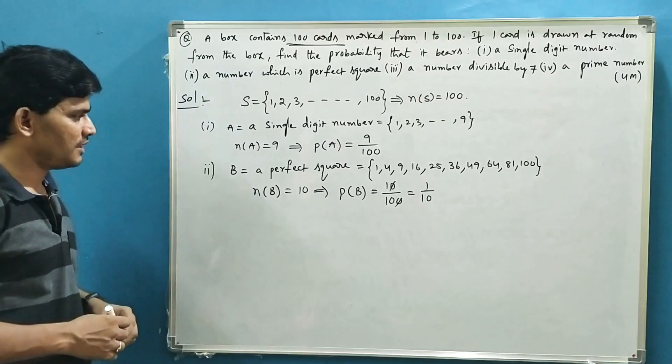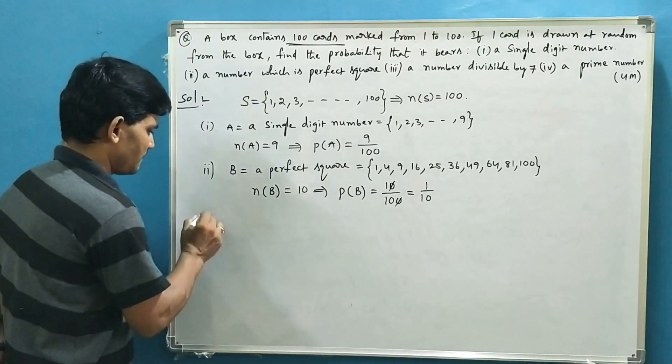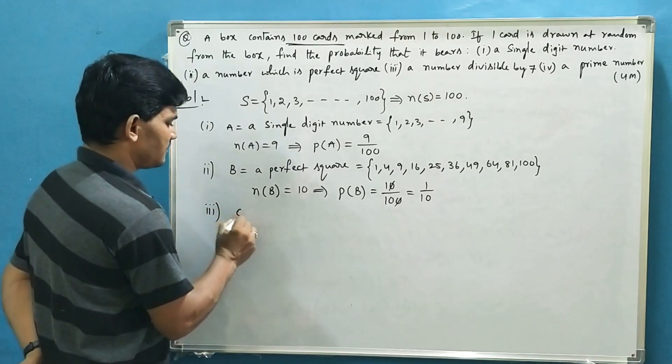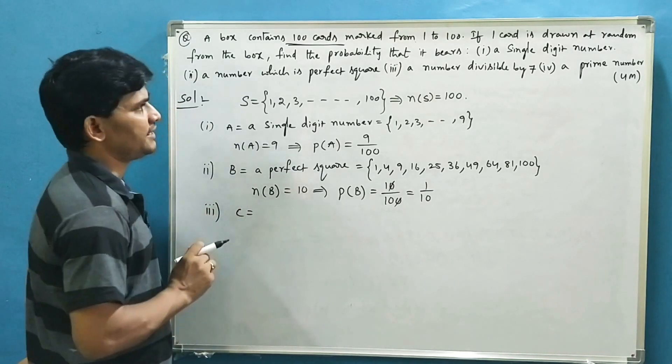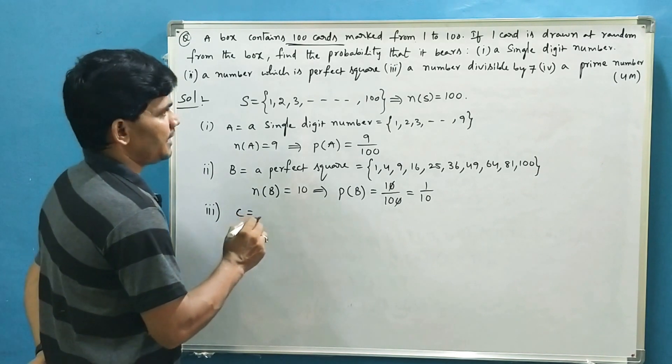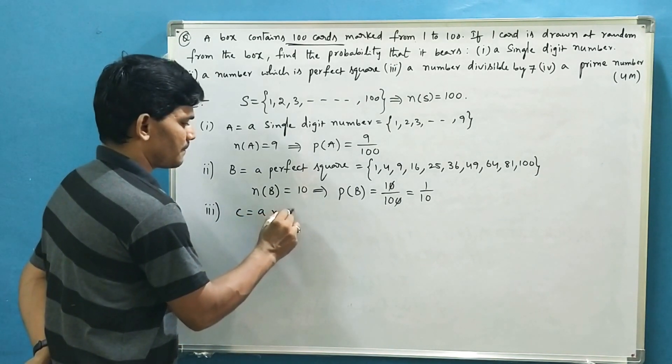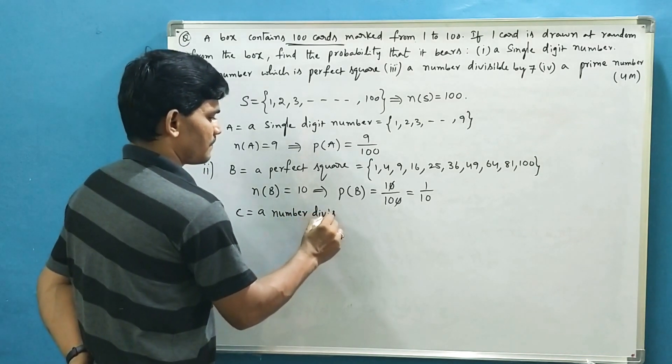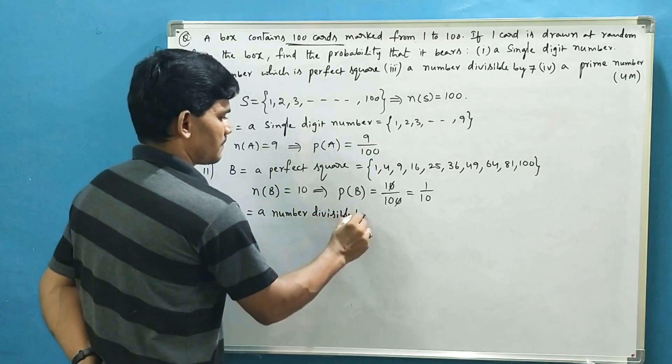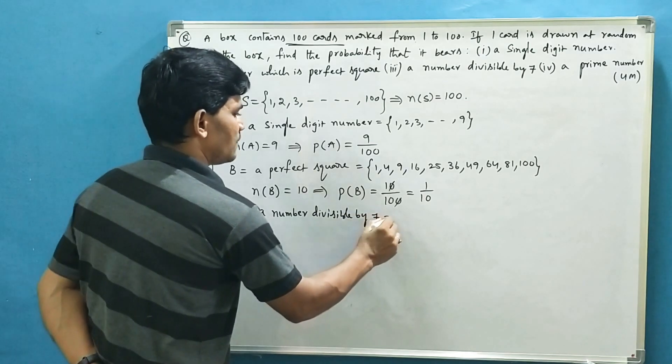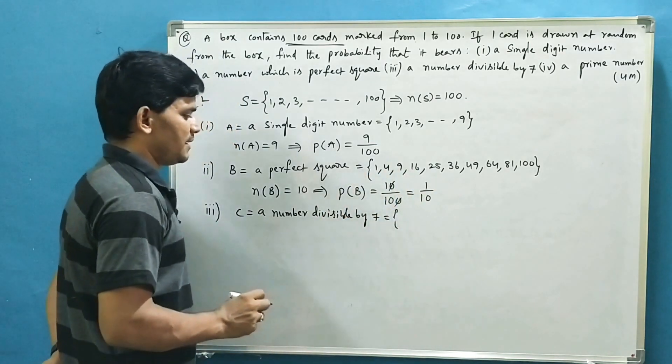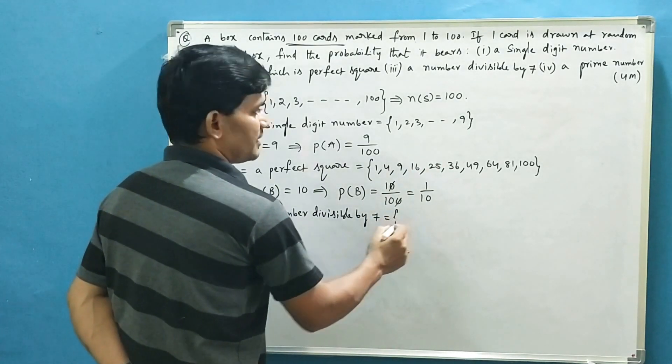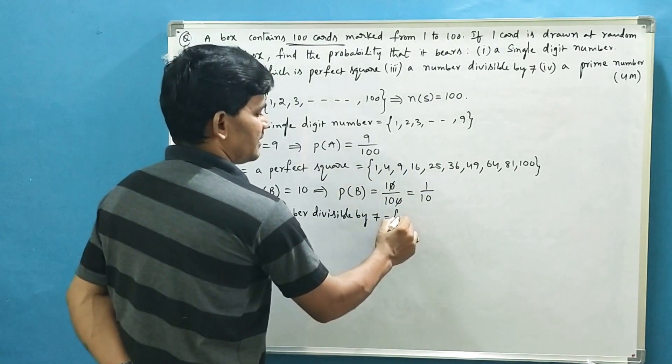Next, let us go for the third one. The third event as C, which is a number divisible by 7. You know, number divisible by 7 is nothing but multiples of 7. What are multiples of 7? From 1 to 100: 7, 14, 21, so on.